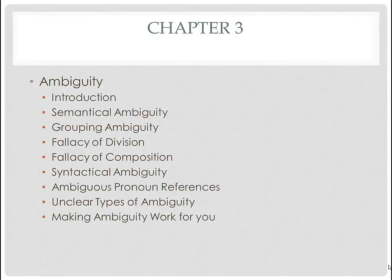Now the way to fix semantical ambiguity is pretty straightforward. Since the ambiguity arises because there's a particular word or phrase that is ambiguous, the way to fix it is to simply swap out the word or phrase with one that is not ambiguous. For example, with the statement 'Sally always chooses the right side,' suppose we mean that Sally always chooses the morally correct side, that she's a virtuous person.